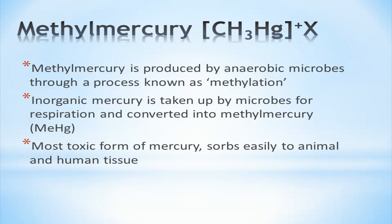Methylmercury is the organic form of mercury with a basic formula of CH₃Hg⁺X, where X is some negative ion or ligand. It is produced by anaerobic microbes through a process known as methylation, where inorganic mercury is taken up by microbes and methylated with a CH₃ group. Methylmercury is the most toxic form of mercury and absorbs easily to animal and human tissue when ingested. It can lead to a diminished reproductive capacity in affected wildlife.